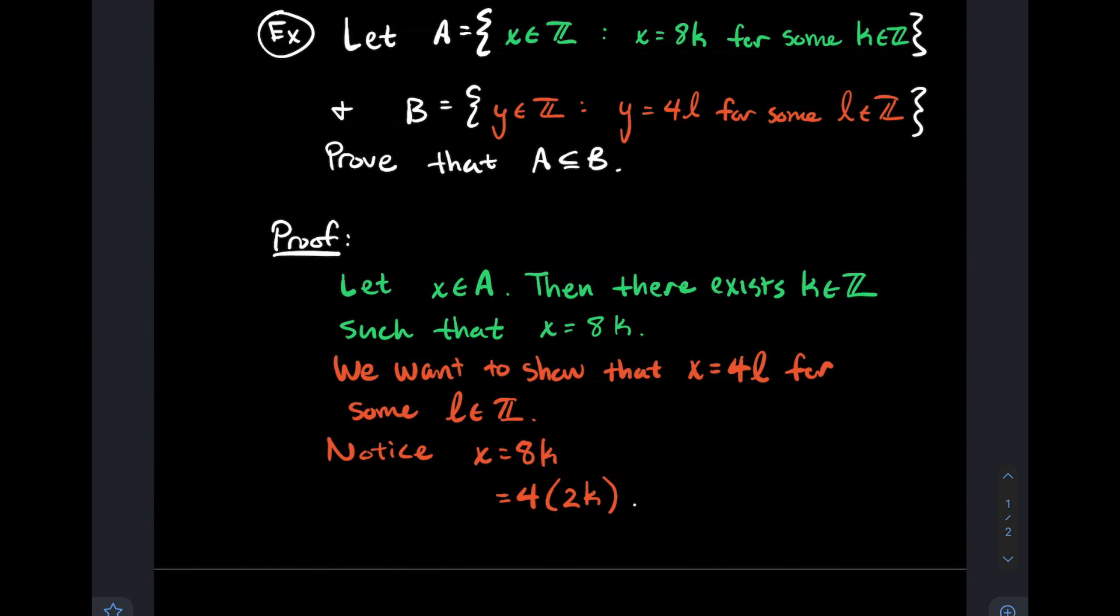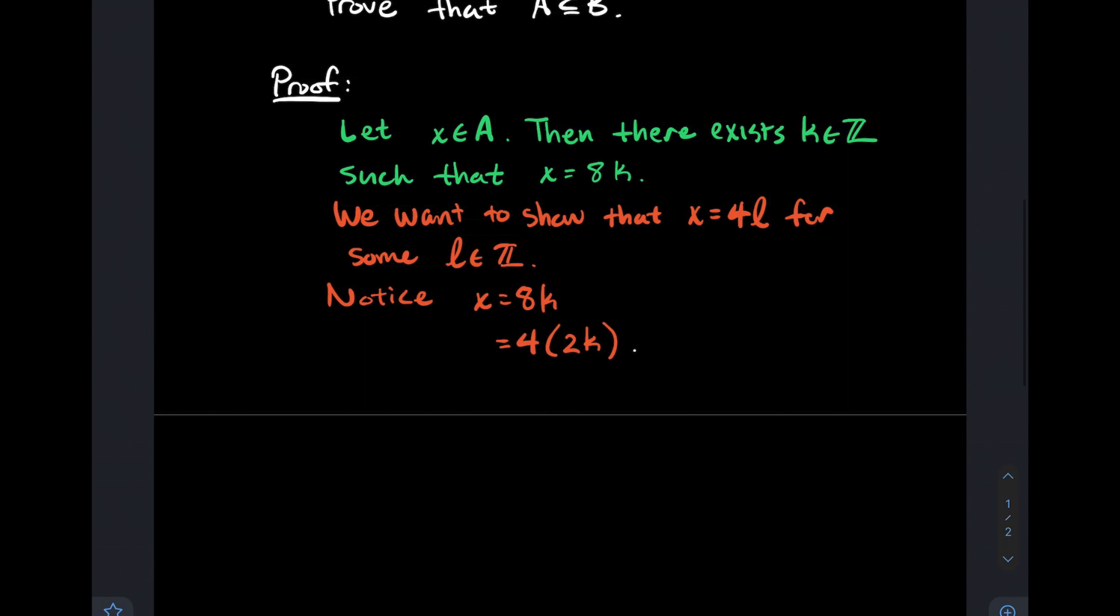That's the L that we're looking for. I don't really care what L is in this problem. You're just trying to convince somebody that there is an integer for which four times that integer is X. And we found it. That's all we care about.